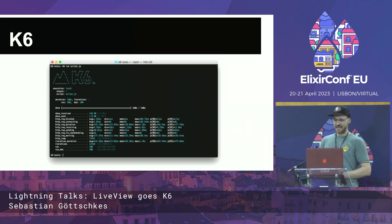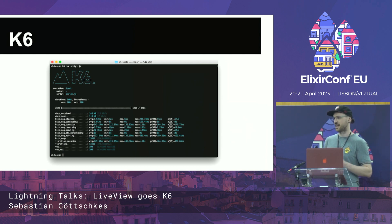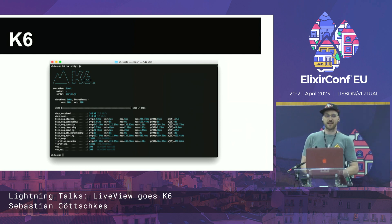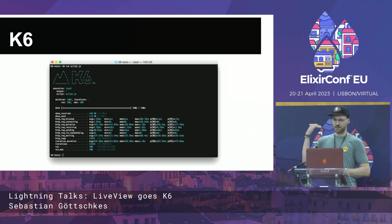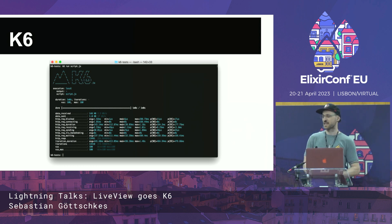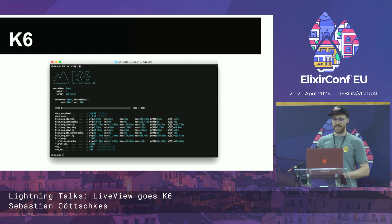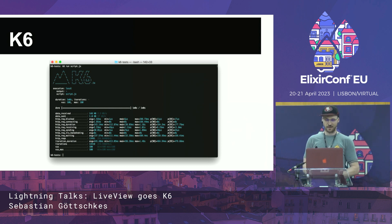K6 will spin up many virtual users, which you can configure. You can say you want 100 parallel users hitting your app, and then you implement workflows of what these users are going to do. Afterwards, you get a report of what they actually did and what your numbers were.